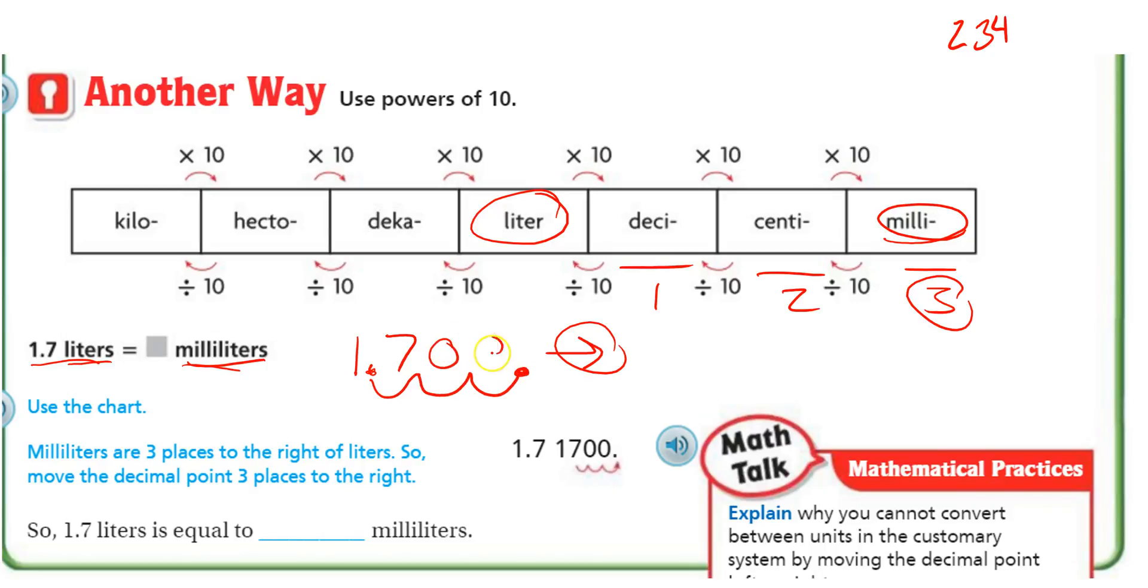I put my zero placeholders in here so this decimal got bounced all the way to the back, and so now my new number is 1700, because the decimal would be behind. So 1700 milliliters, and you can probably see why I prefer this method.